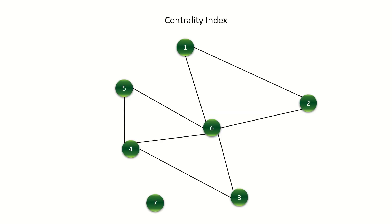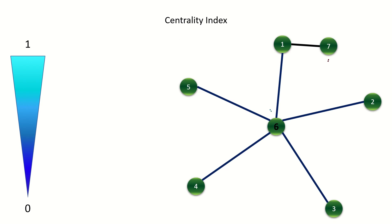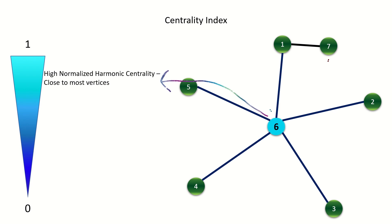Harmonic centrality is a centrality index — it quantifies the importance of individual vertices in the graph. When normalized for the size of the graph, this centrality index ranges from 0 to 1, where 1 represents the most important vertex possible and 0 represents the least important. Vertices with high normalized harmonic centrality will be either directly connected to many other vertices or close to most vertices in the graph.